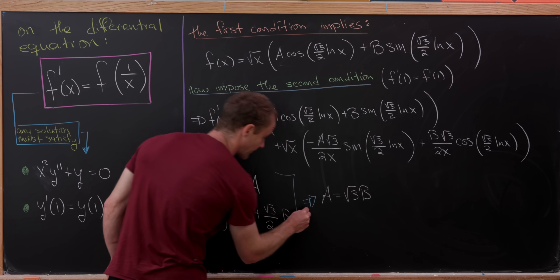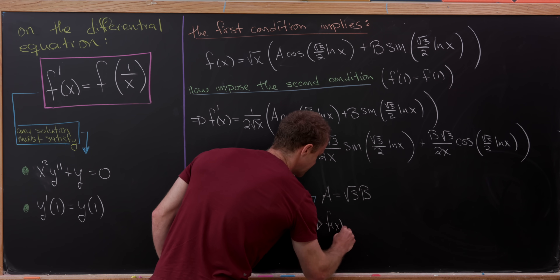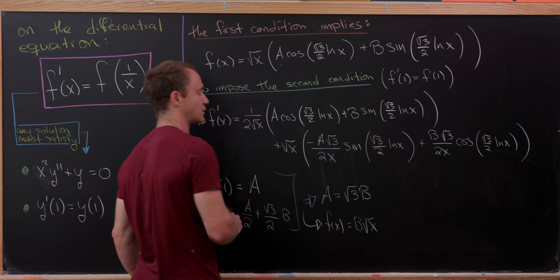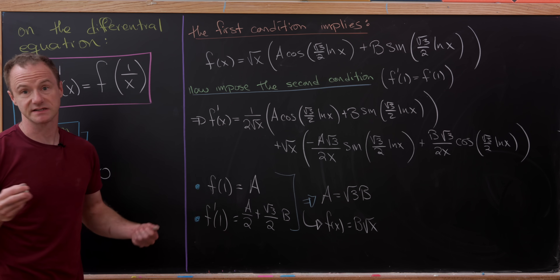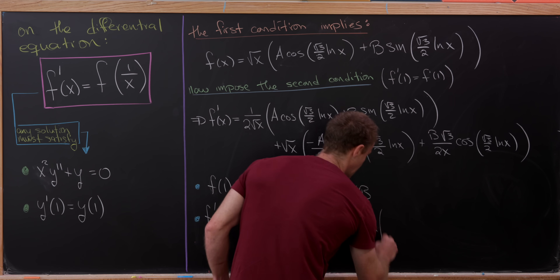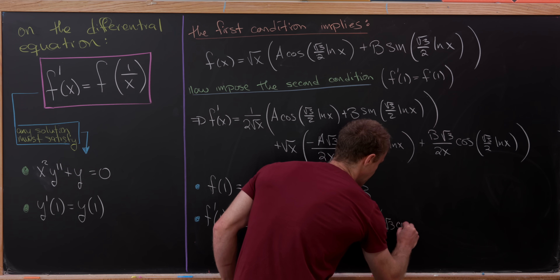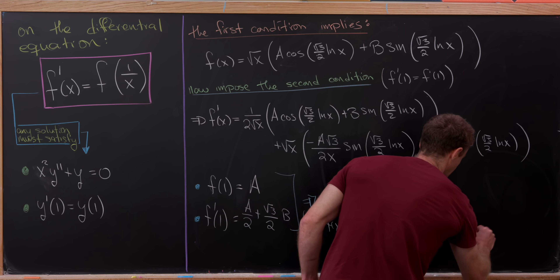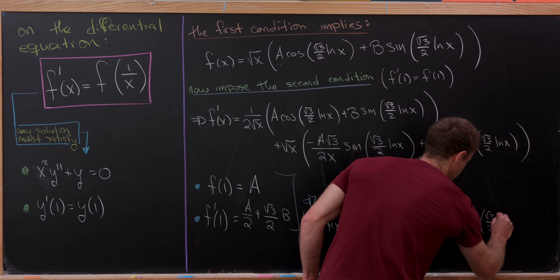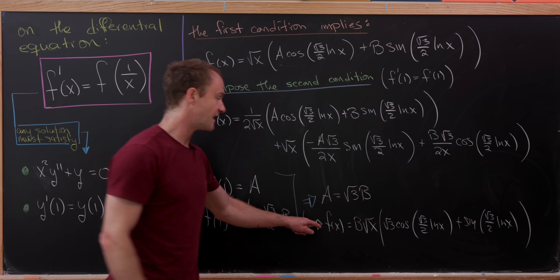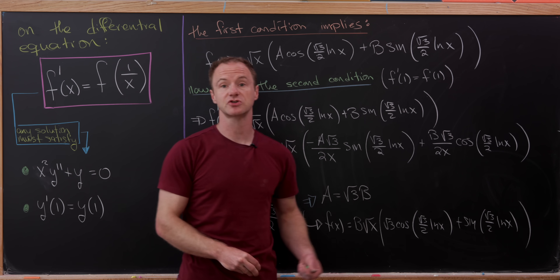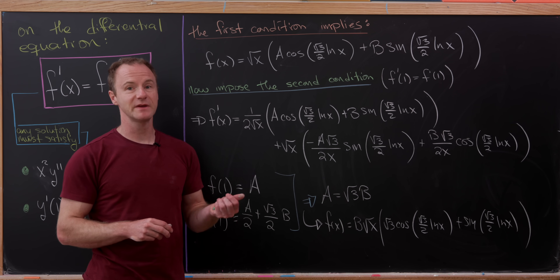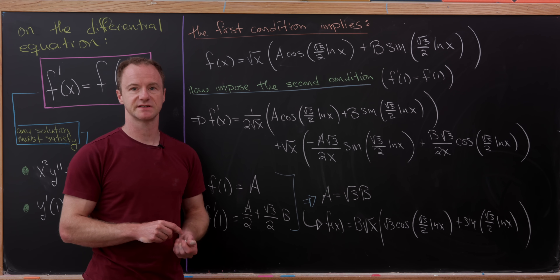With a equals root 3 times b, we have our final solution. f of x equals some constant b times the square root of x times the quantity root 3 times cosine of (root 3 over 2 times ln x) plus sine of (root 3 over 2 times ln x). We've solved this functional differential equation. If you haven't subscribed yet, maybe consider subscribing — it would really help. And that's a good place to stop.